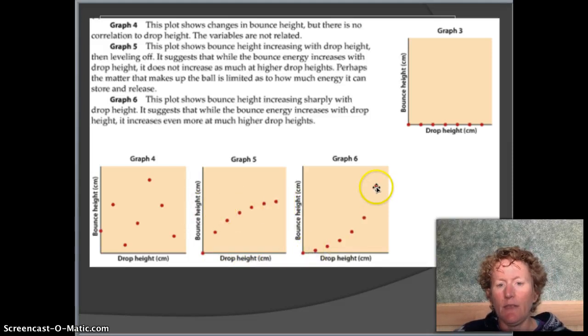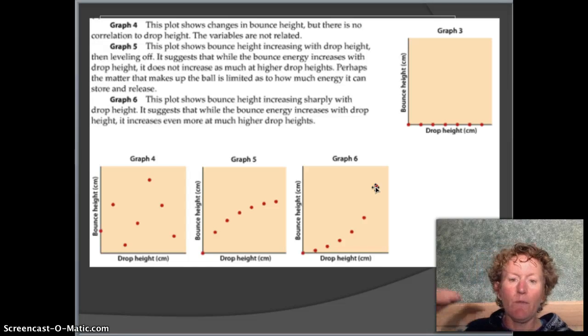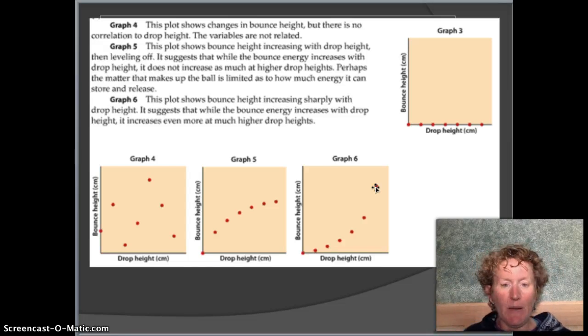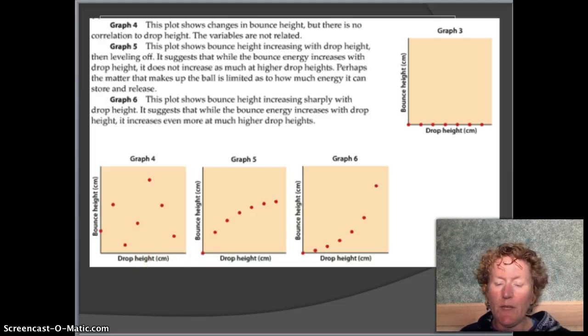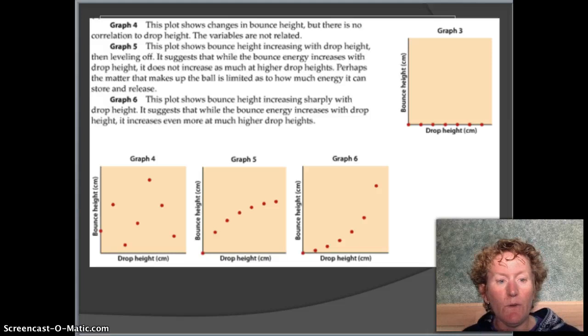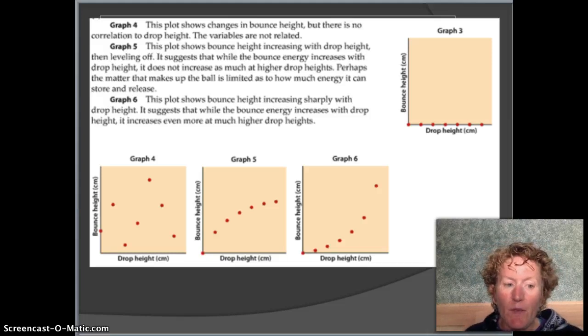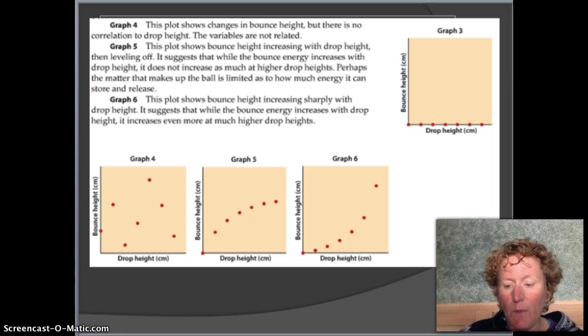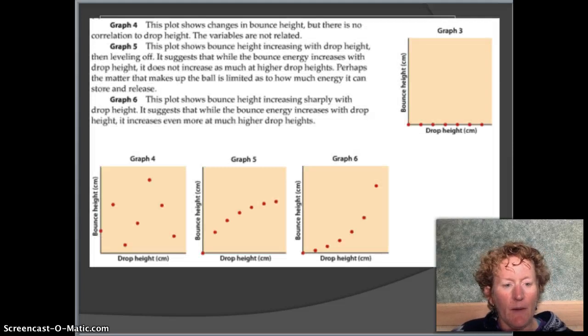Graph 6 says the bounce height is going to increase exponentially. In other words, the higher you drop it, the higher the proportion of the bounce is going to be. So those are some relationships that we might choose to be part of our hypothesis. And we're going to use what we know about sports balls to help make that hypothesis. Let's go to the actual lab here.